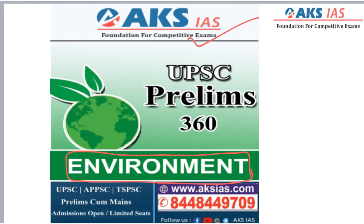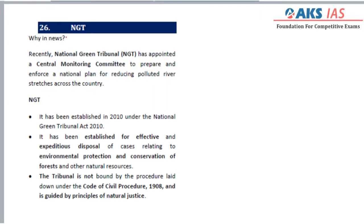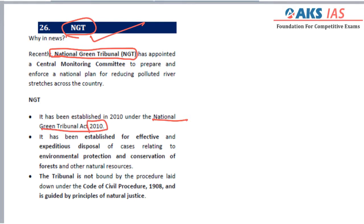Our first topic is the National Green Tribunal. The National Green Tribunal has been in the news on various cases, so it is important to understand what it is. It is a statutory body established under the National Green Tribunal Act in the year 2010. It has a wide range of powers with respect to environmental laws. One important thing to remember is that the National Green Tribunal is not guided by the Code of Civil Procedure of 1908, but by the principles of natural justice.